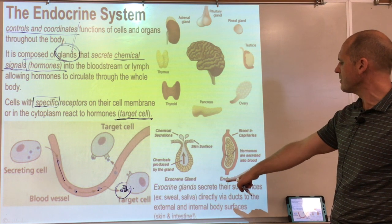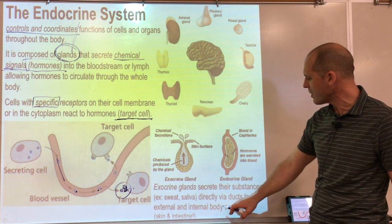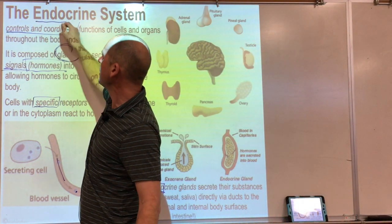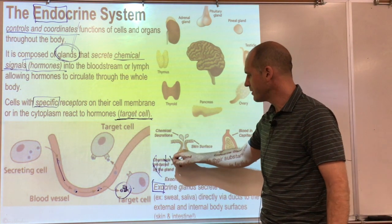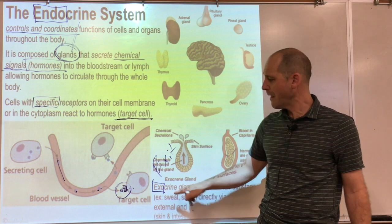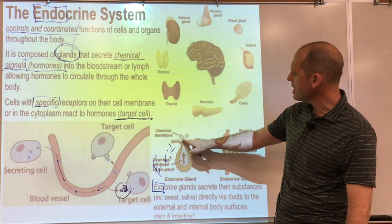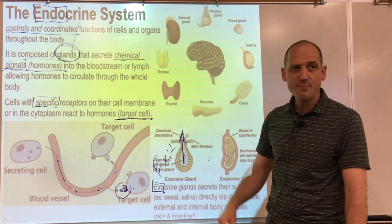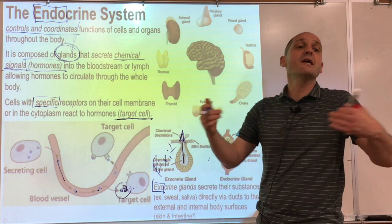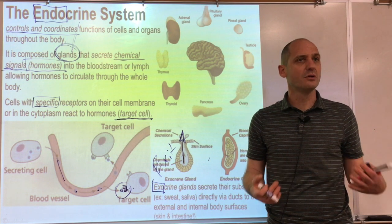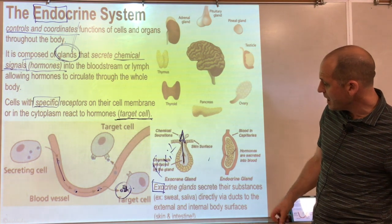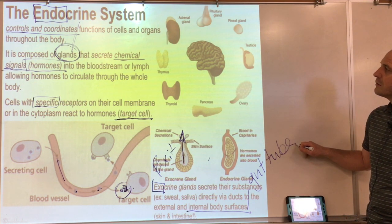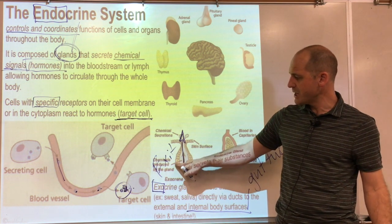Exocrine glands secrete their substances directly via ducts to the external body surface or to internal body surfaces like the gut tube. 'Exo' comes from the word 'exit,' and 'crine' means gland. So exocrine glands — like sweat glands — secrete substances to the outside of the body, or to internal surfaces that have connections to the outside, like the gut tube.